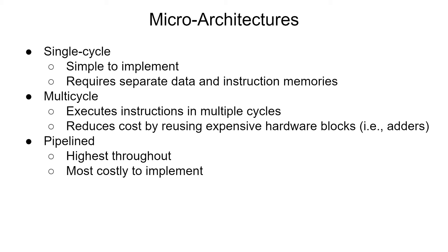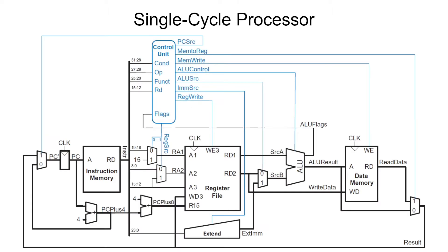From a pedagogical standpoint, single-cycle processors are the easiest to understand and implement, and thus the example code in the textbook is a single-cycle processor. The basic structure of a single-cycle processor includes two parts: the datapath and control unit. These two branches manifest as the ARM and datapath blocks in the code, which will be explored later.